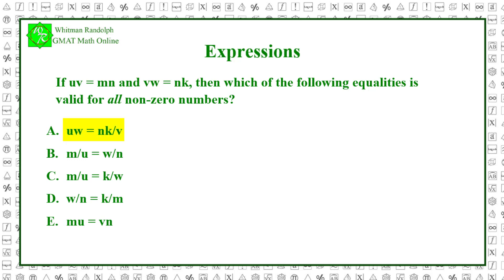Suppose answer A is true — that is, uw equals nk over v. Since we know that vw equals nk, it follows that w equals nk over v. That would mean uw equals w, which is false — for example, if u equals 2. So answer A is invalid.